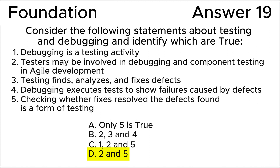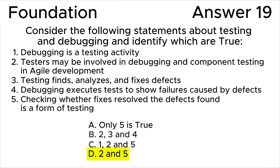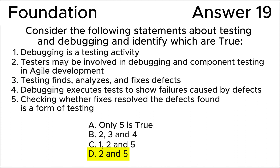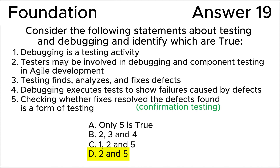Let's take a close look at all the statements from 1 to 5 to find the true and false ones. Statement 1 is wrong because debugging is a development activity. Statement 2 is true — testers may be involved in debugging and component testing in Agile development, even though debugging is a development activity. Statement 3 is wrong because testers do not fix defects; that is a debugging activity. Statement 4 is wrong because that describes a testing activity. Statement 5 is true because that describes confirmation testing.